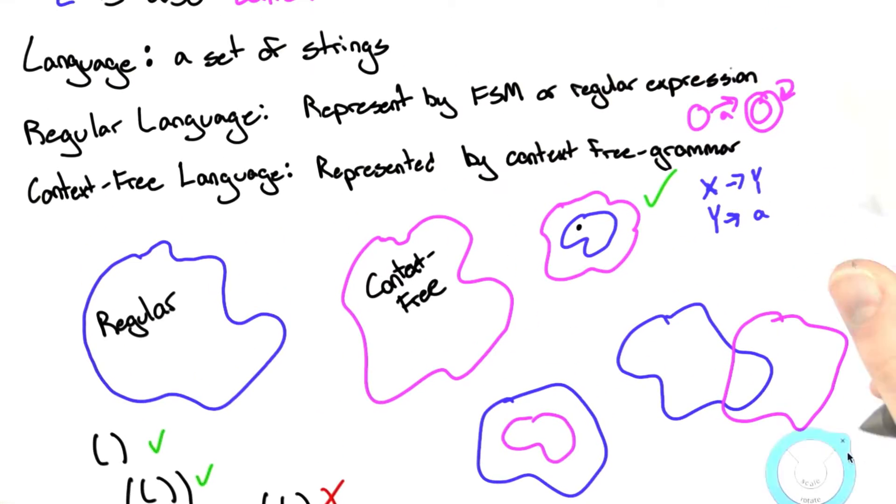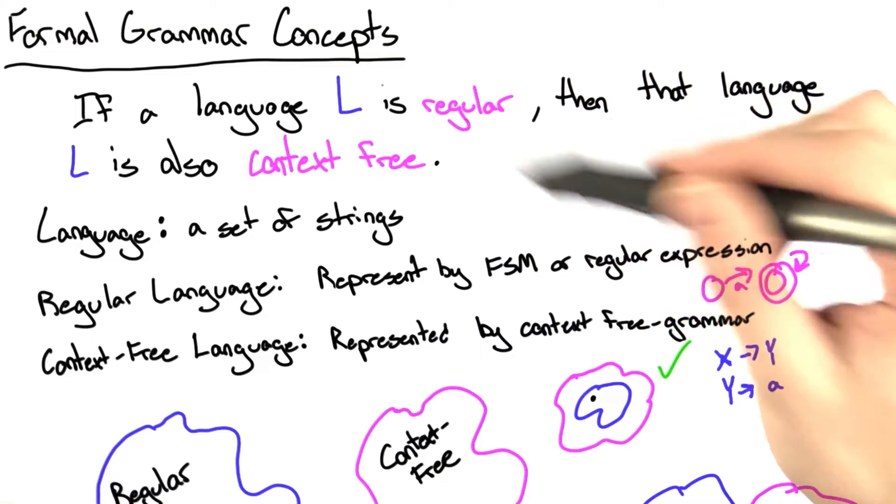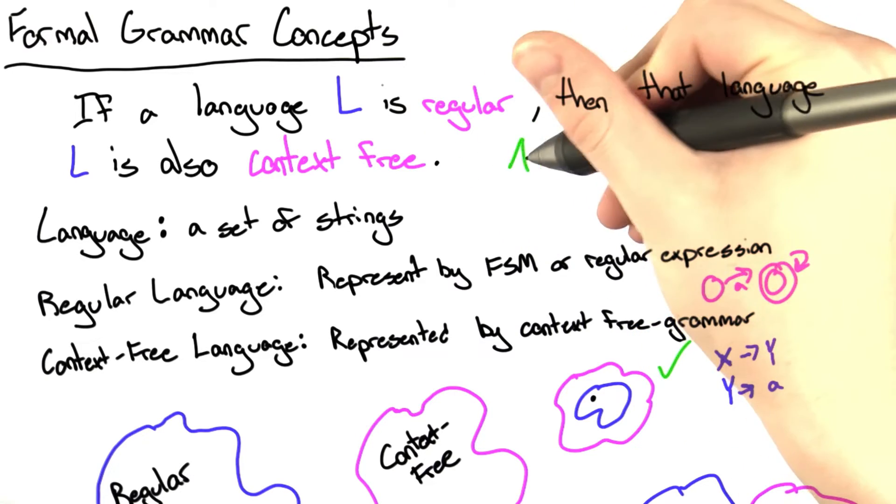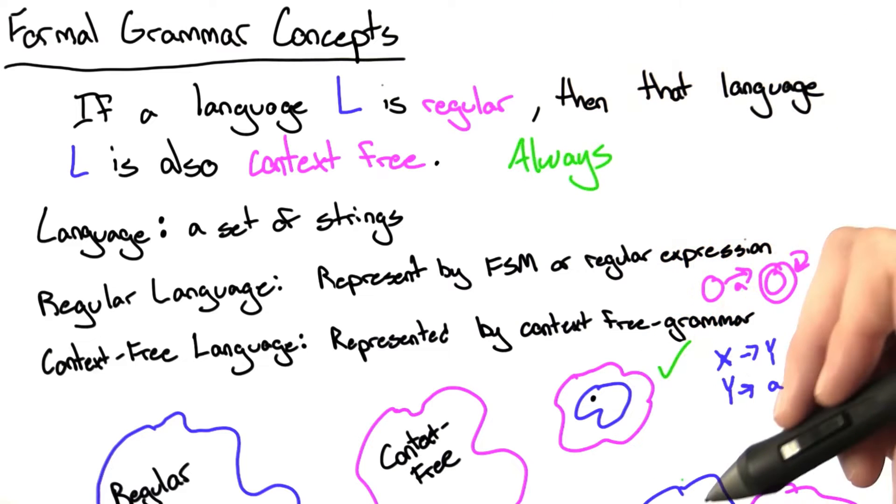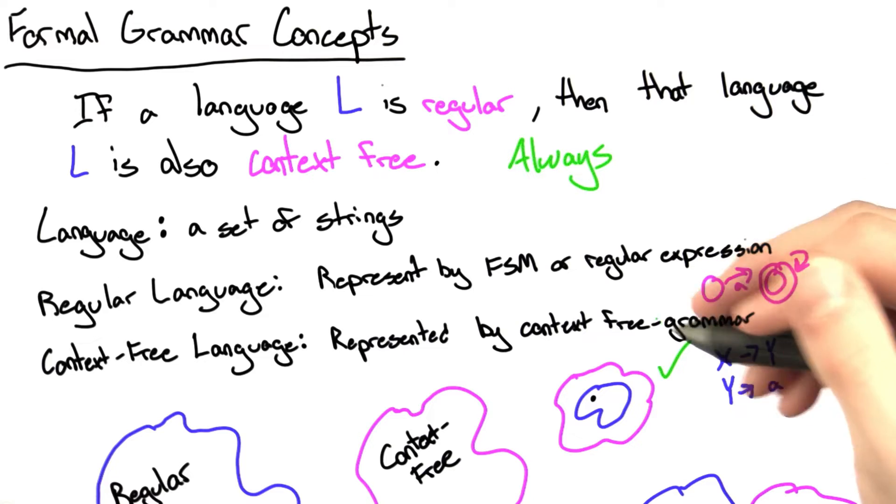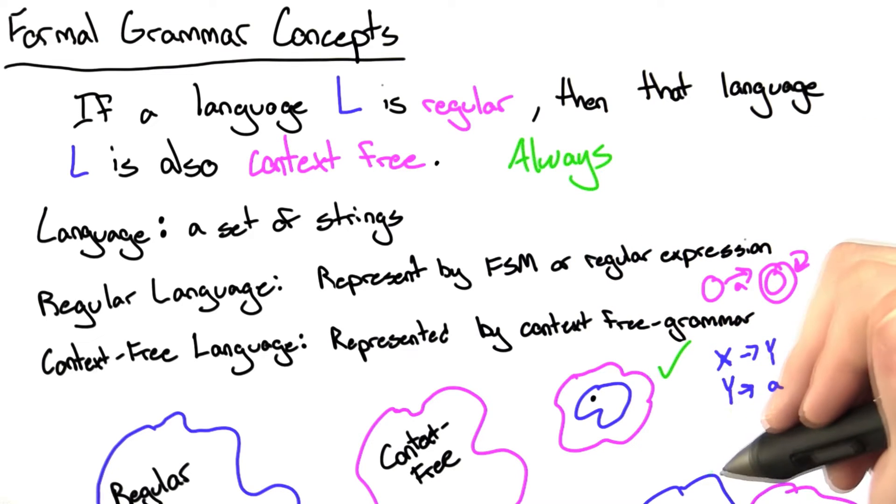So given that review, let's go over the actual questions. If a language is regular, then that language is also context-free. This is always true because we have our Pac-Man diagram here, and also because you can take any regular language and represent it with a context-free grammar.